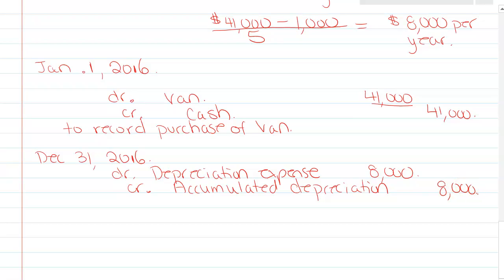Now we're going to credit this account called accumulated depreciation of $8,000. So now what happens is when I put my balance sheet together, I'll take the van of $41,000, and then I put this account together with it, the accumulated depreciation of $8,000.